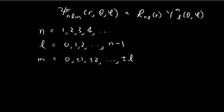Each solution ψ is indexed by these three numbers, so you can choose any combination of n, l, and m as long as they satisfy their respective restrictions, and you will get a different solution for every different choice. The angular component is given by the spherical harmonics.